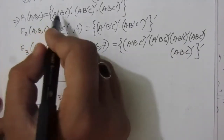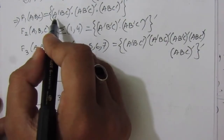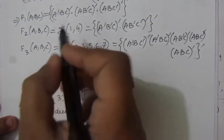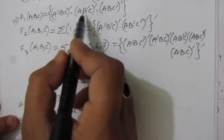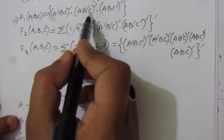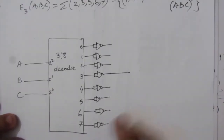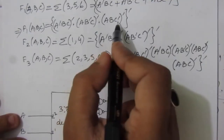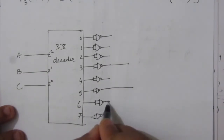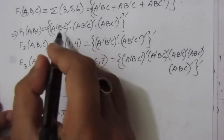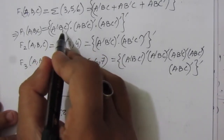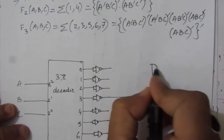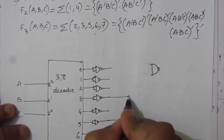For F1, the minterms are 3, 5, and 6. Minterm 3 (A̅BC = 011) corresponds to decoder output line 3, minterm 5 (AB̅C = 101) to line 5, and minterm 6 (ABC̅ = 110) to line 6. We take lines 3, 5, and 6 and feed them as inputs to a three-input NAND gate to implement F1.